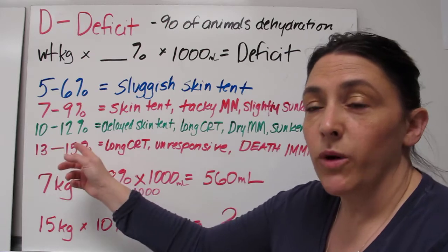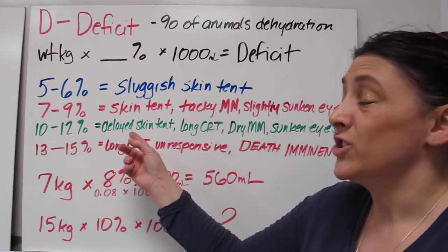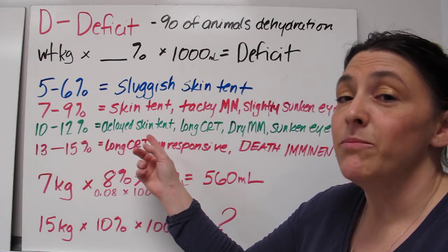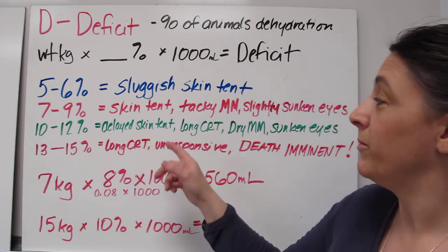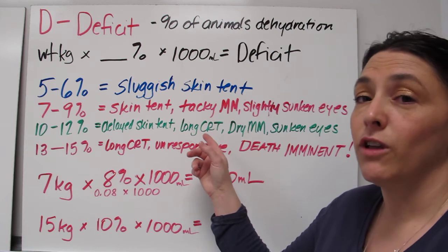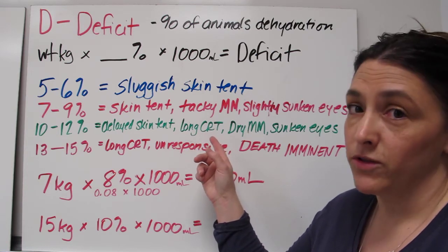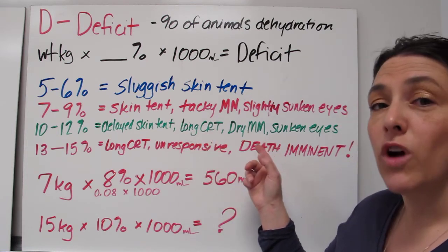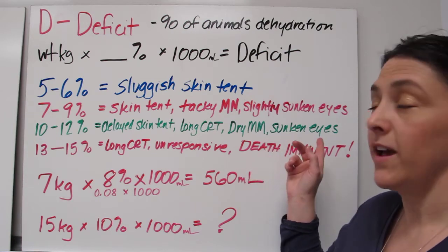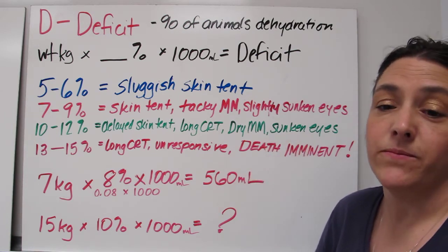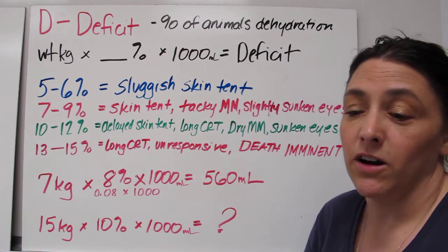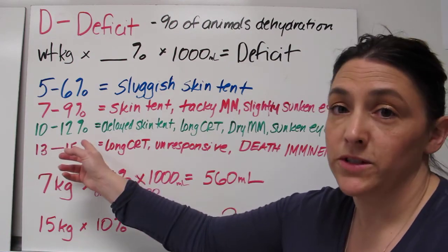At 10 to 12 percent, this has an extremely delayed skin tent. It may not even go back down. You may have to pet the animal to get it to go back down. They have a long cap refill time, over 3 seconds. They have dry mucous membranes. They have sunken eyes. You will definitely see how sunken their eyes are if they are 10 to 12 percent dehydrated.